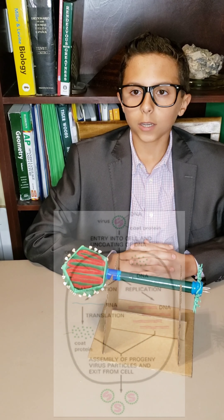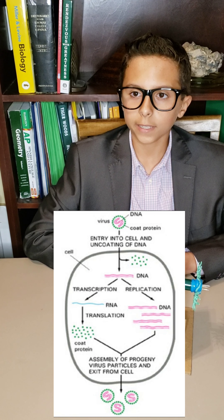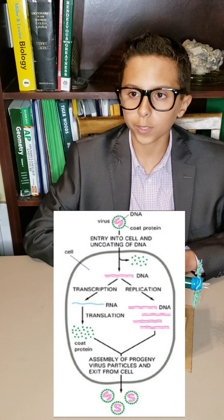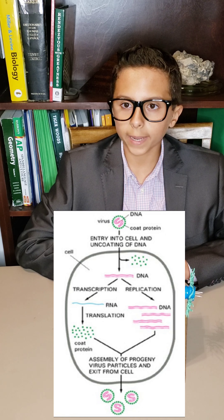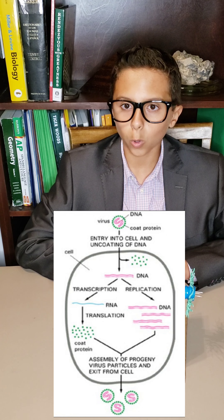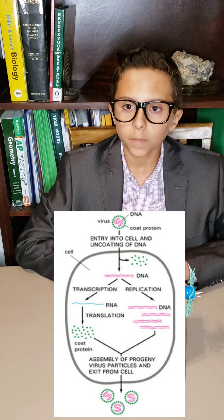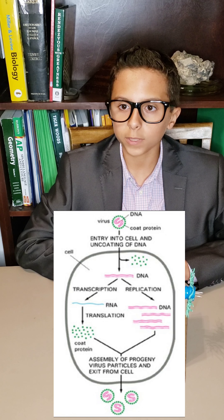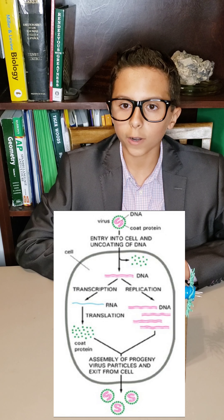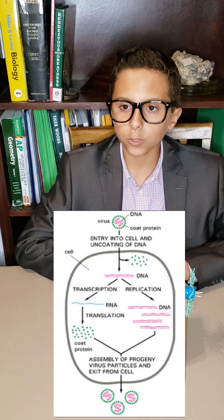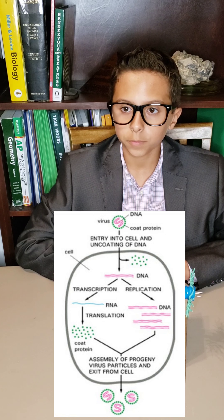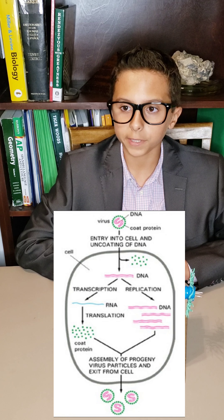Once inside the cell, the skeleton key virus immediately causes a lytic infection, taking advantage of the internal structures of the cell in order to trick it into replicating the viral genome within the host cell's nucleus. Replicated nucleic acids are then assembled with proteins within the cell to assemble new virus particles. These new virus particles are replicated until the cell membrane ruptures, destroying the host cell and releasing new viruses to look for new cells to attack.